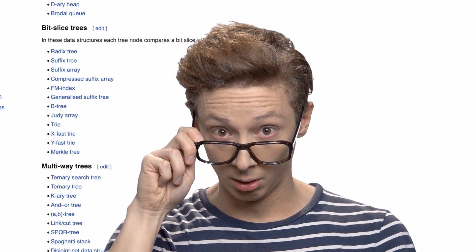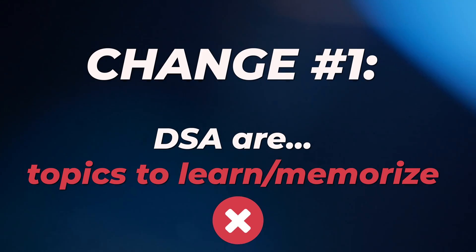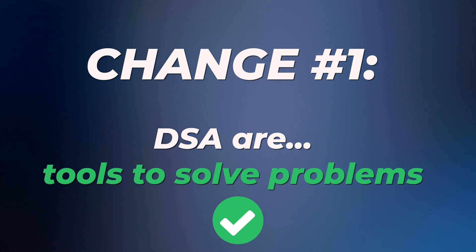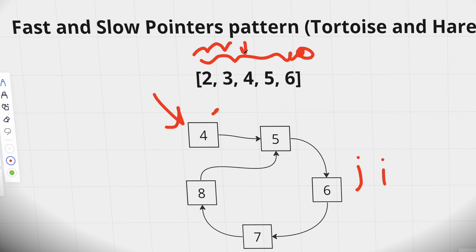Most people see data structures and algorithms as theoretical topics they just have to memorize and master. But the first change I made — and this was a game changer — is I started seeing data structures and algorithms as just different tools to solve different problems. Rather than just focusing on memorizing what a linked list is, I started looking at it as a way to solve certain kinds of problems, and thinking about when a linked list is actually useful. And I know you're probably screaming at your screen: 'tell me what these topics are and how do I know when to use which one?' — and that brings us to the second change.